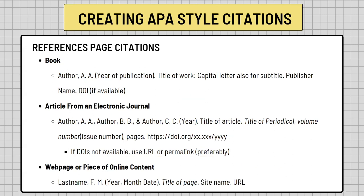Now creating your references page citations. Here you can see three different examples of citations in APA style — the first being a book, the second an article from an electronic journal, and the third a web page or piece of online content. These are three of the more popular types of resources that are cited. They all have very similar components, but also a thing or two that makes them different from each other. Each resource you cite is going to have different components of information.